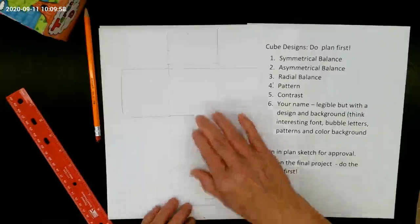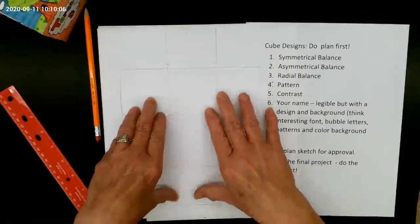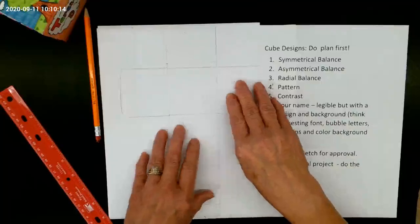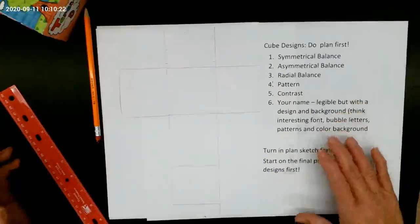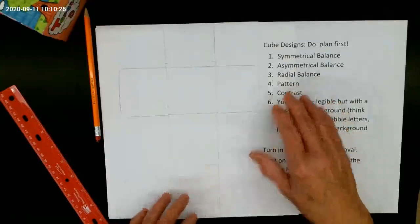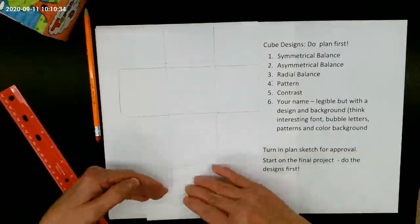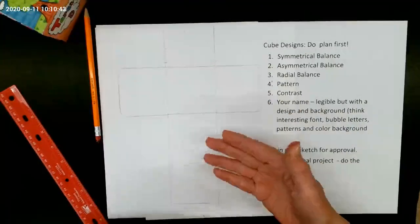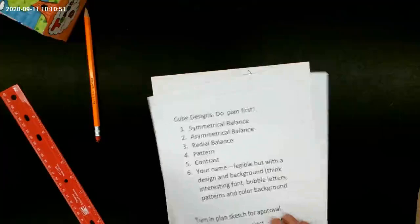But you do want to have a plan. You want to have your different types of balance and your pattern and your contrast and your name on one of these sides. And you're just going to draw them on here. Maybe you did a beautiful balance design that you want to use here. Maybe you want to use a pattern behind your name and another pattern in the pattern section. You can use some of the things that you've already designed. You just want to roughly sketch them in or show me what your designs are going to be. Once you show me your plan, then you're going to be approved to do the template.